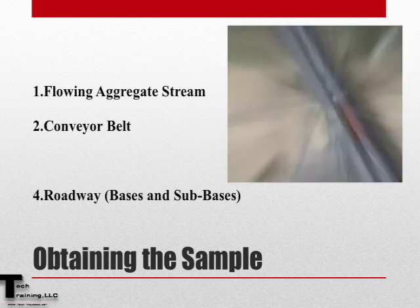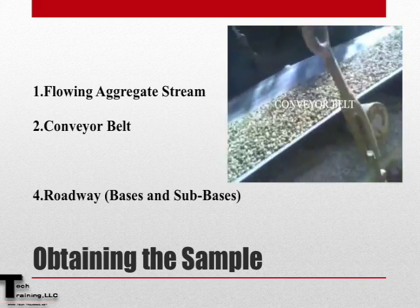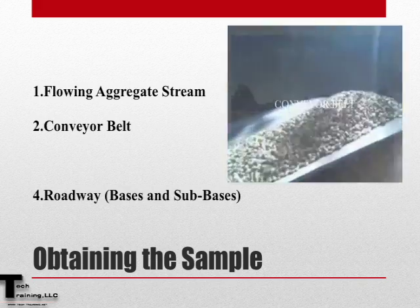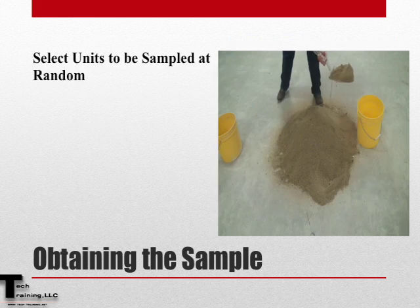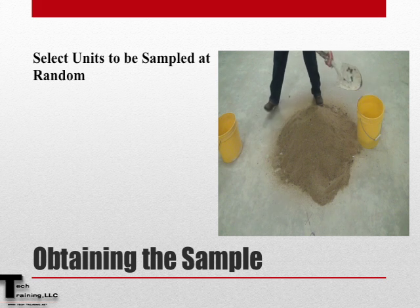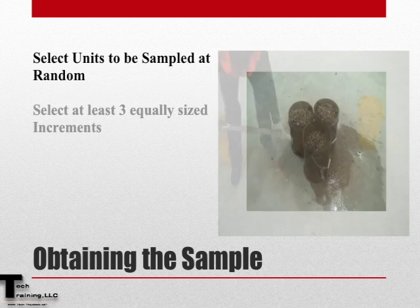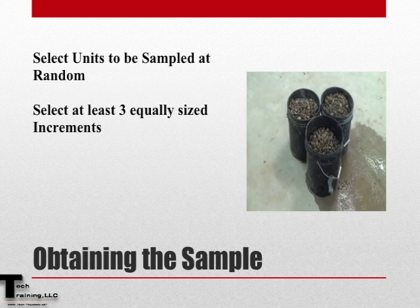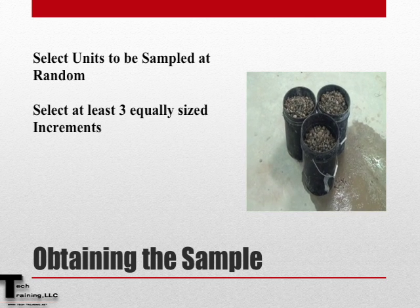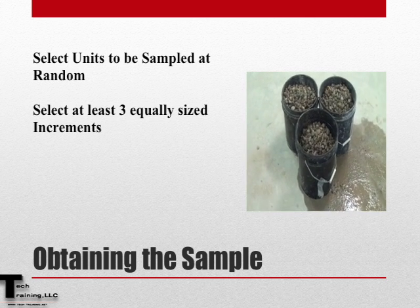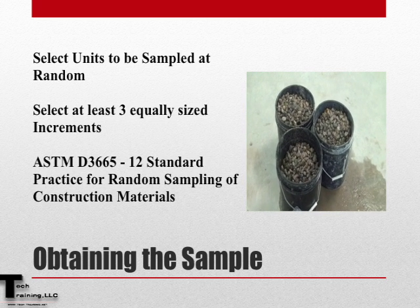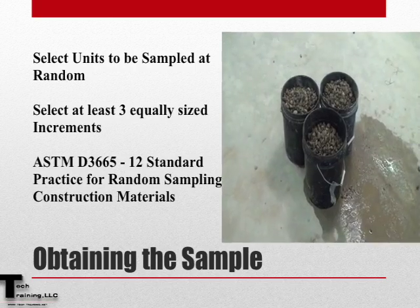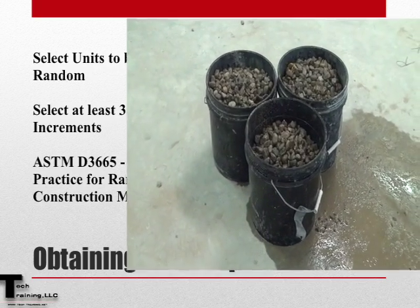Sampling from a flowing aggregate stream, sampling from a conveyor belt, and sampling from a roadway share some commonalities in the fact that the samples will be obtained at random. If a random sampling plan cannot be agreed upon, ASTM D3665, Standard Practice for Random Samples of Construction Materials, may be helpful.